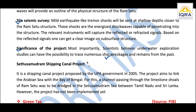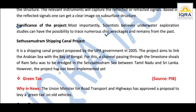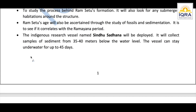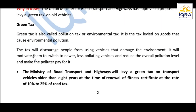There is also the Setu Samudaram Shipping Canal Project, started by the UPA government in 2005, which aimed to link the Arabian Sea with the Bay of Bengal through Ram Setu. However, it involved religious sentiments and couldn't be implemented. To summarize: Ram Setu's location is important for the exam, and the current development is that the Archaeological Survey of India has approved an underwater research project to find its origins.